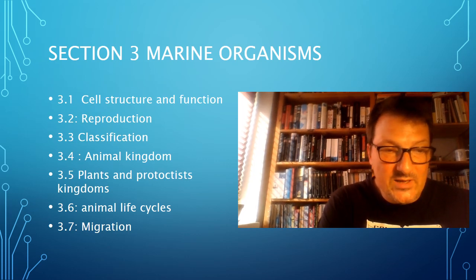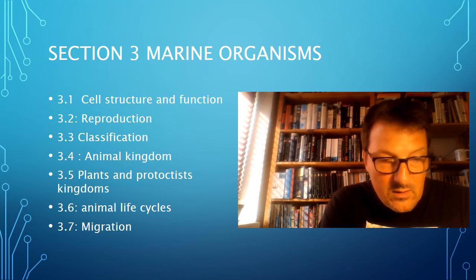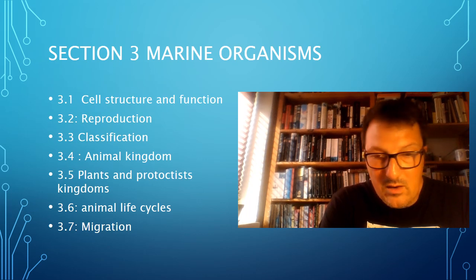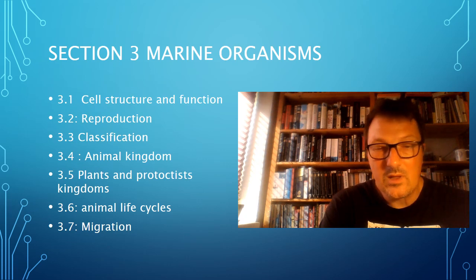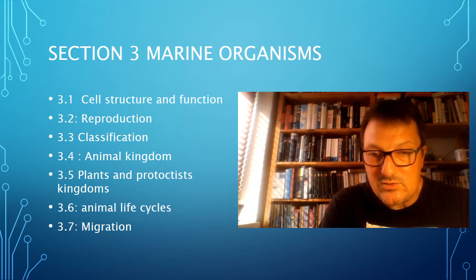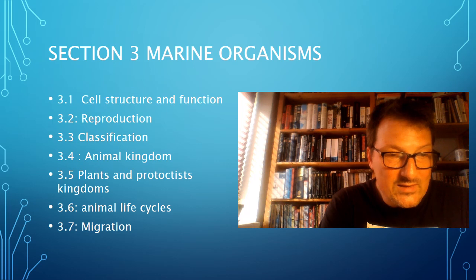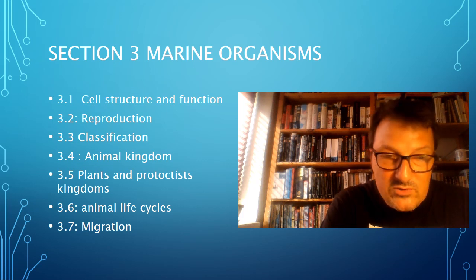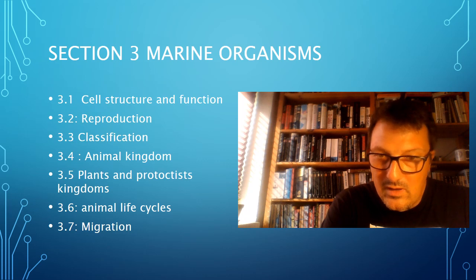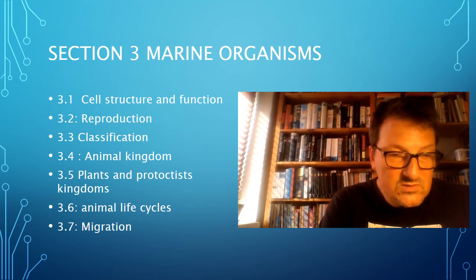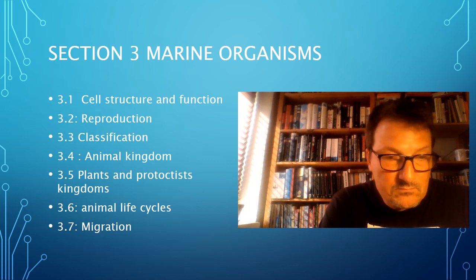3.4 then takes us into the animal kingdom. We are going to learn how to identify the different groups of marine vertebrates, a lot about structures of fish, and how to identify many different marine invertebrates. We're also going to look at identifying and comparing biological specimens — both from cells and whole organisms — using microscopes and photographs. And the classic Cambridge favourite: we are going to learn how to calculate magnification. 3.5 takes us into the plant and protist kingdom, looking at sea grass, seaweed, flagellates, and diatoms.